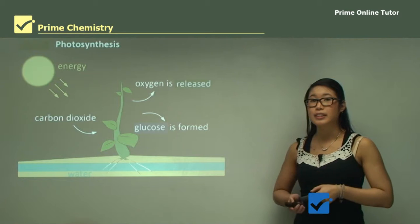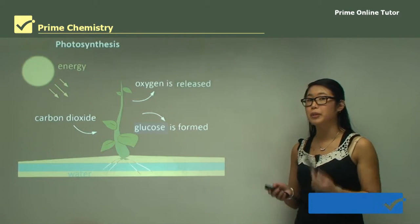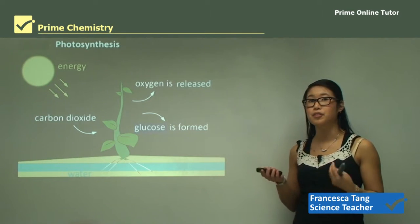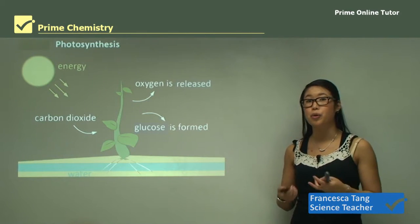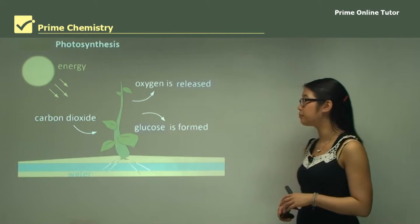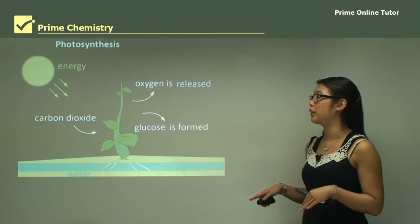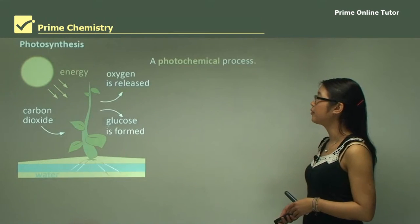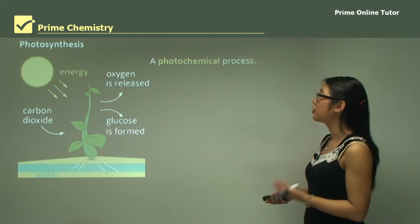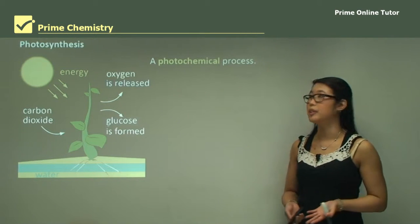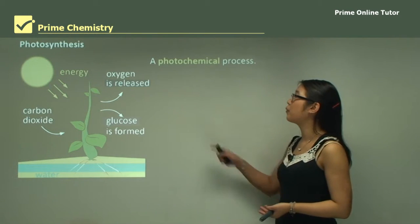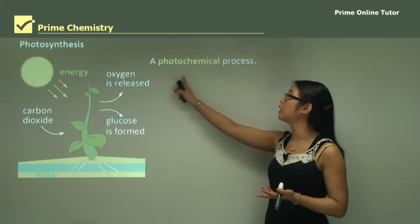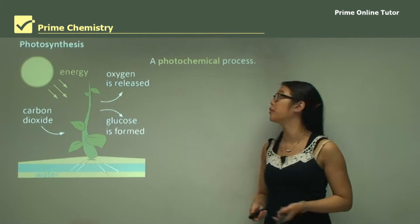Hey everyone. This lesson we'll still be looking at energy, but in particular photosynthesis, which is the conversion of solar energy into a store of energy like in sugars. Specifically we're looking at plants and how they convert this energy. Photosynthesis is a photochemical process — the 'photo' part tells us it's to do with light, so solar energy, and 'chemical' tells us it's a chemical reaction.